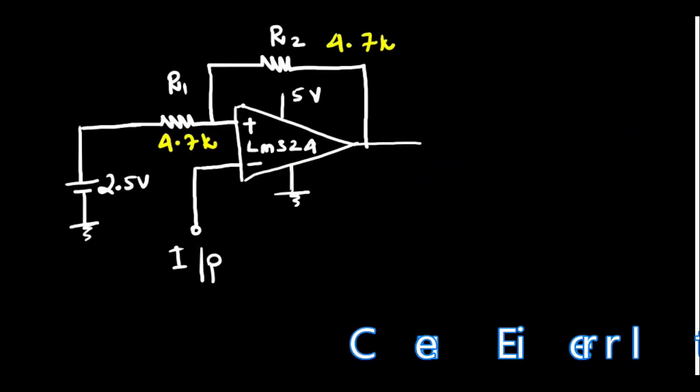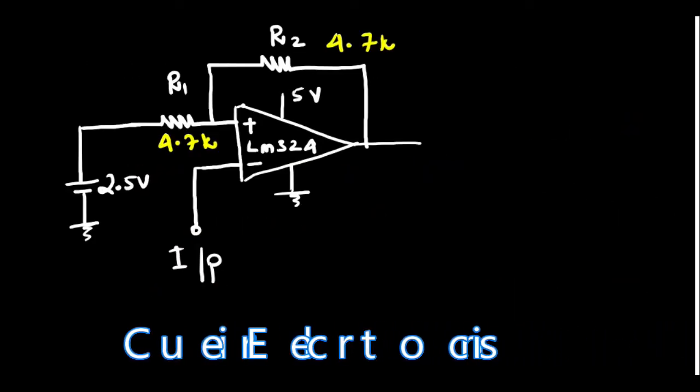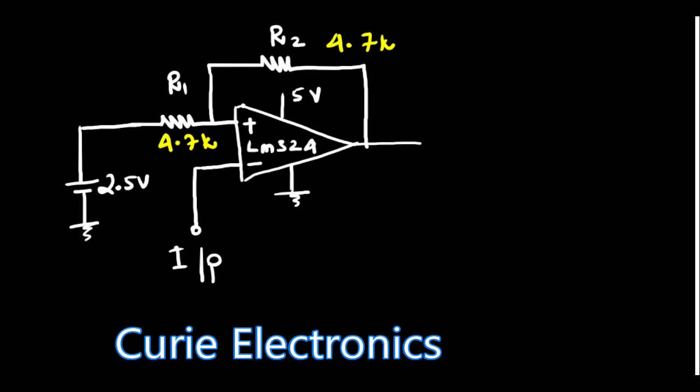I forgot to tell you something. I have used a pull-up resistor also. This is a 1K pull-up resistor. So here we get the output.